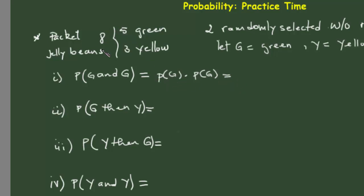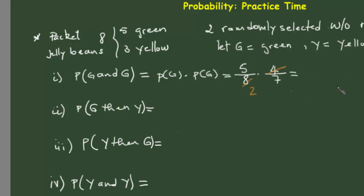Choosing a green first: out of eight jelly beans total, we have five green, so we choose one green out of five — giving us 5/8. Once we've chosen one, the packet has seven jelly beans remaining. We want green again, but since we already took one green, only four remain. So this gives us 5/8 times 4/7, which equals 5/14.